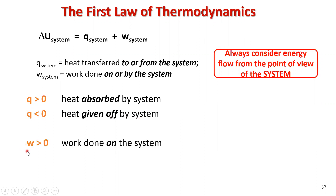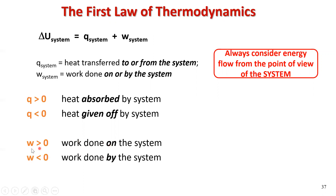Looking at W — the work — if W is greater than zero, it means that work is being done on the system by the surroundings. If W is a negative value, that means work is being done by the system.